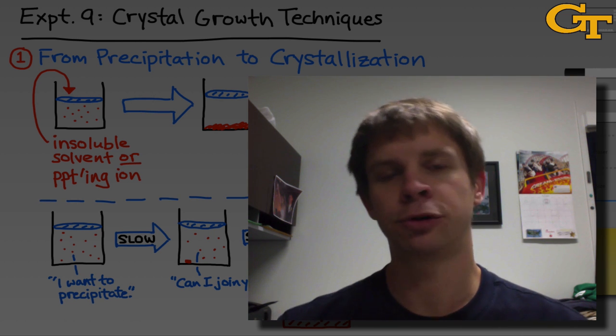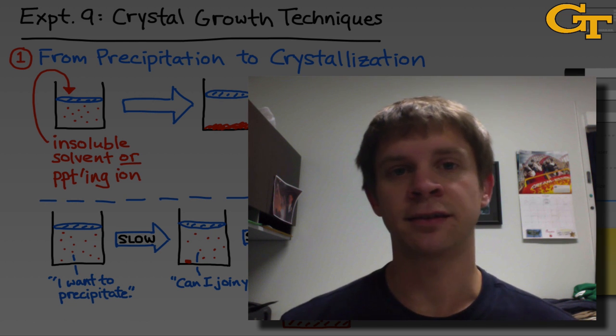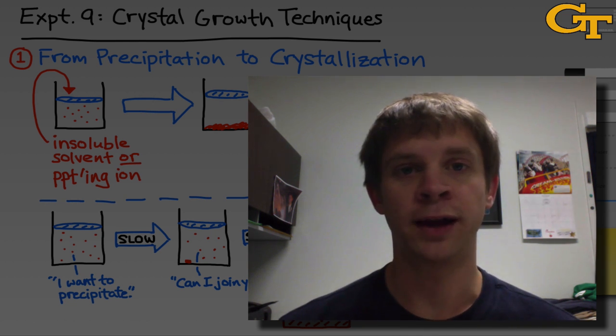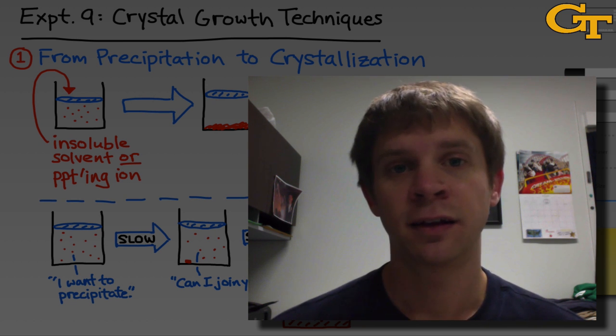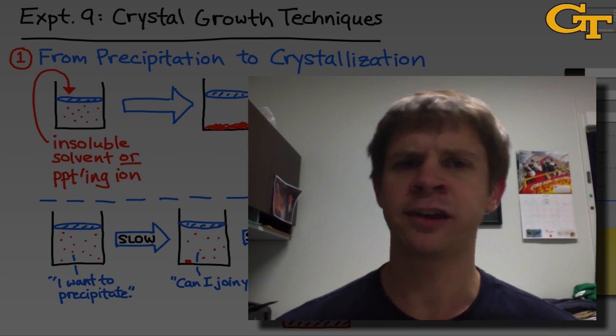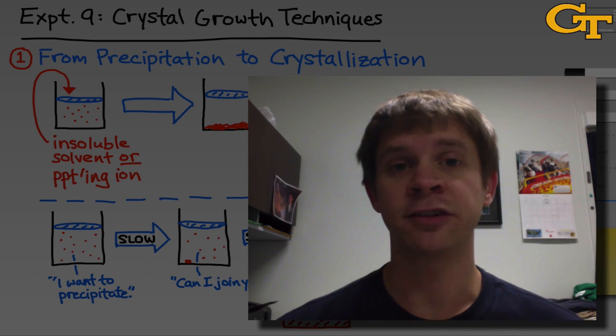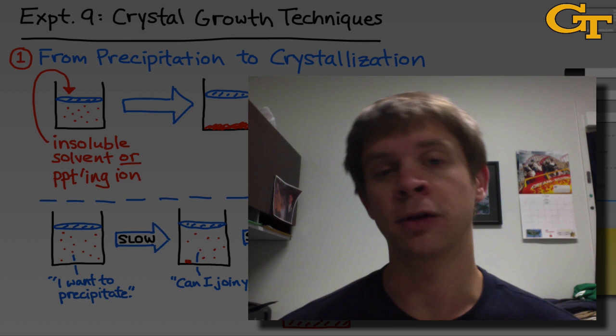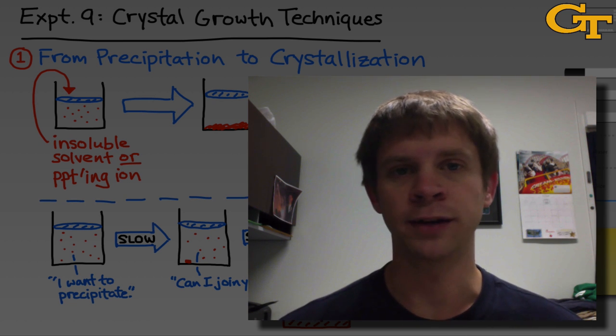Crystallization is similar to precipitation in that the grand idea is to get a solid to come out of solution in some way, forming a regularly patterned solid within the solution. But crystallization is different from precipitation in that it's very slow, and it's designed to produce a regularly arrayed solid as opposed to a solid containing molecules in just a random orientation.